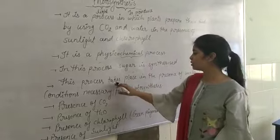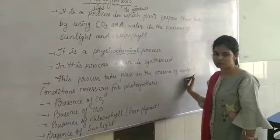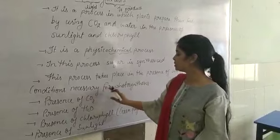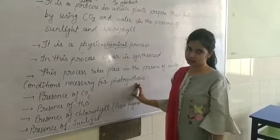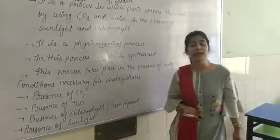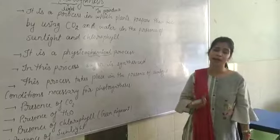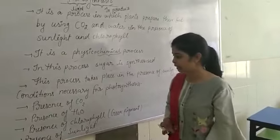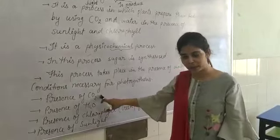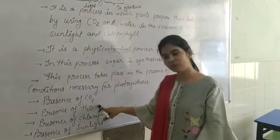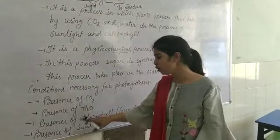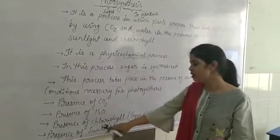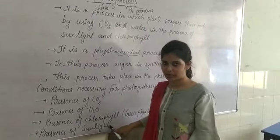This process takes place in the presence of sunlight. The conditions necessary for the process of photosynthesis are: presence of carbon dioxide, presence of H₂O, presence of chlorophyll — which is the green pigment — and presence of sunlight.